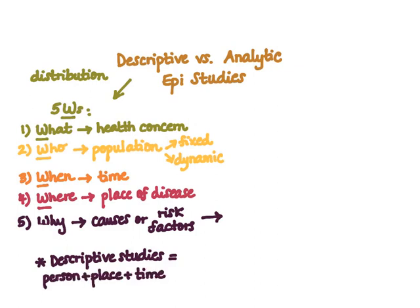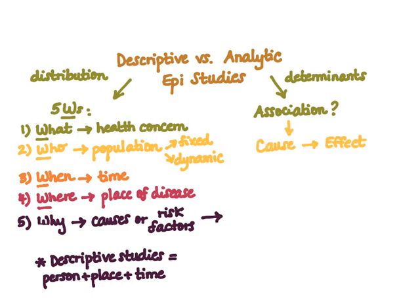Just to recap, descriptive studies mostly refer to person, place, and time. Analytic studies focus on the second part of the epidemiology definition — the determinants. These aim to establish an association between cause and effect, or an exposure variable and a health outcome variable.